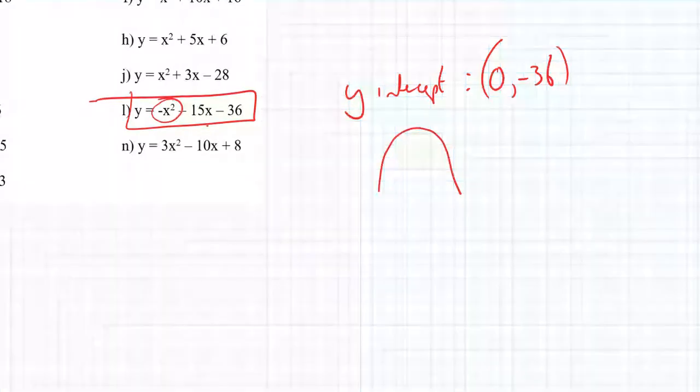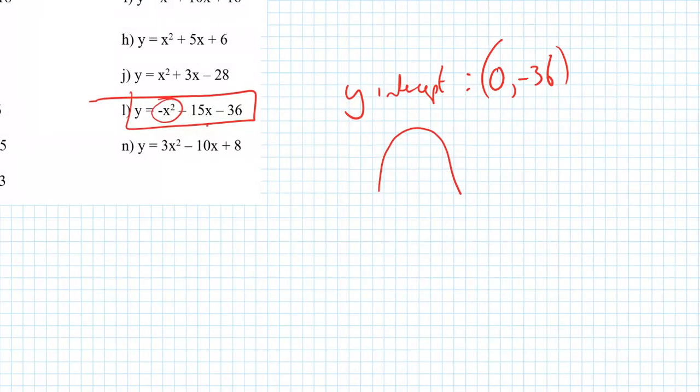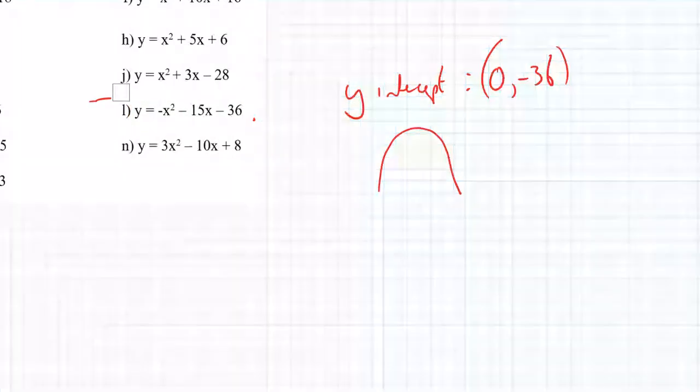What about the shape? That's the next easiest thing to do. We've got a negative sign there. So we're looking at a sad face, a sad face because we've got a negative symbol there.